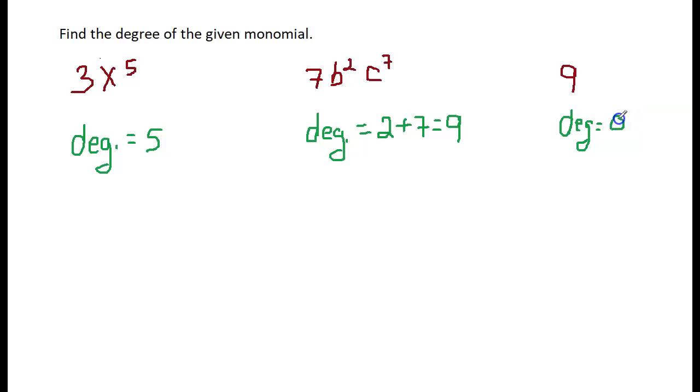Why? Because there's no variable. It requires a variable to have a degree. Okay, well have fun with these.